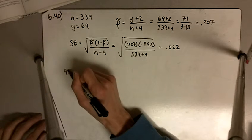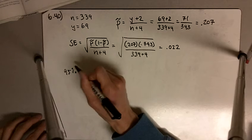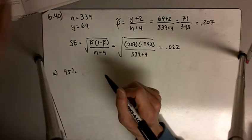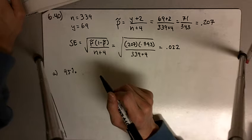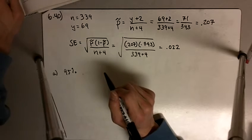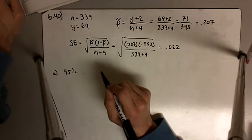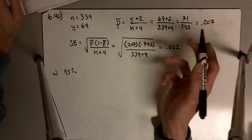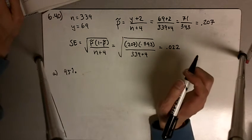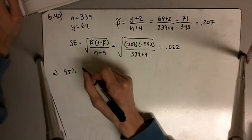So our 95% confidence interval, which is part A. Part A says construct a 95% confidence interval for the probability of adverse reaction to the vaccine, or basically the proportion in our population who's going to have an adverse reaction.